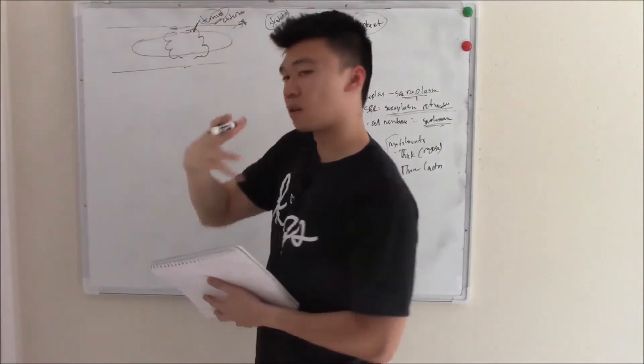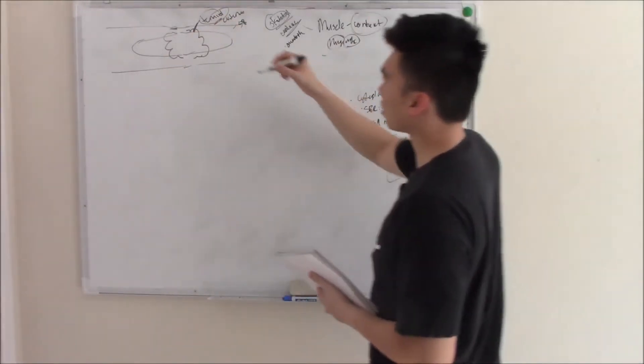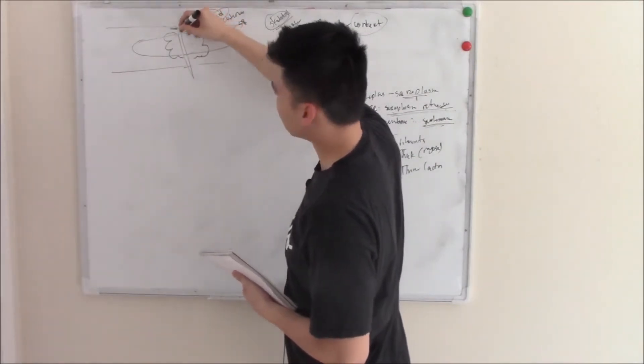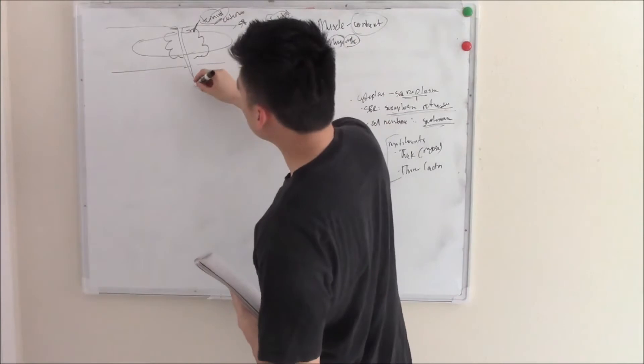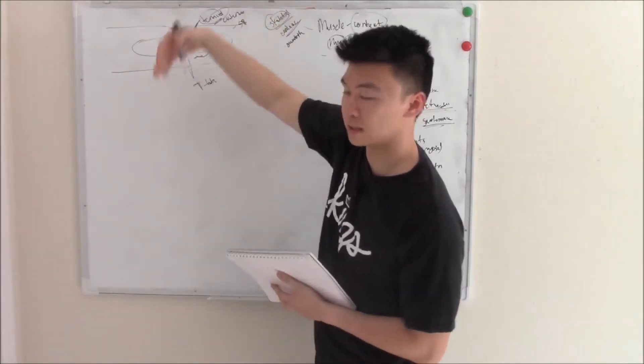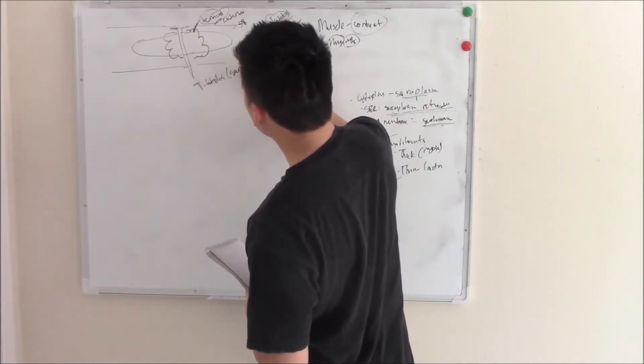Your sarcolemma will also invaginate and come across this entire complex. We call these transverse tubules, or T-tubules, because they traverse the entire complex.